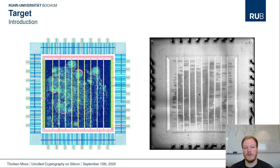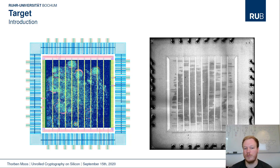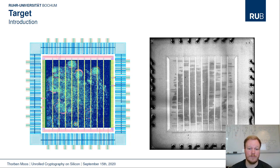So what is this presentation all about? Essentially, we have designed a test chip in 40 nanometer CMOS technology, which includes among some other features an unrolled cryptographic primitive. We are going to carefully analyze this primitive's physical security with respect to passive and non-invasive side channel attacks.